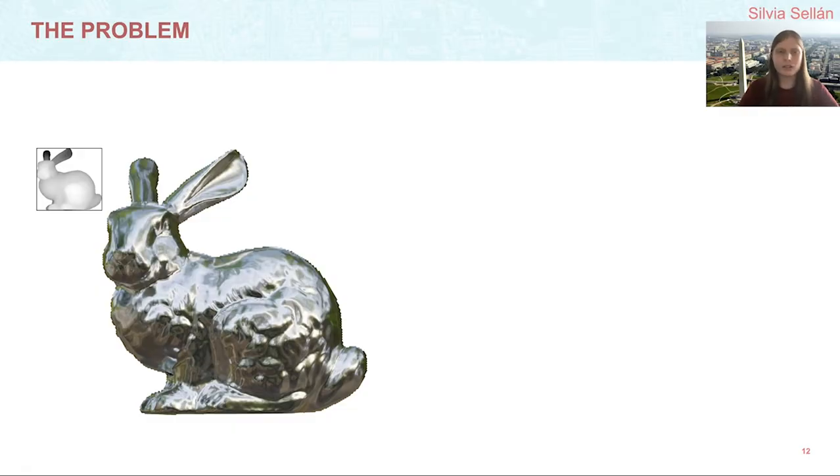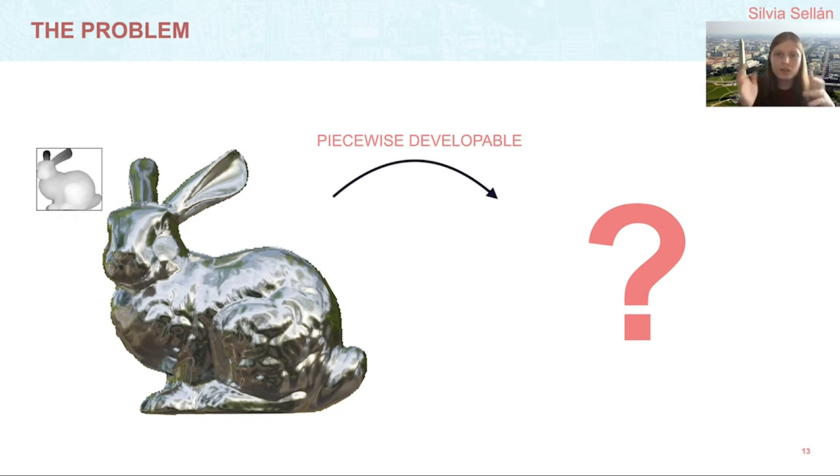We can state it like this: given a generic heightfield as input, how can I get a piecewise developable heightfield as output which resembles this input? You can imagine this as wanting to know what is the closest thing to this bunny that I can build out of bent sheets of metal or pieces of paper.